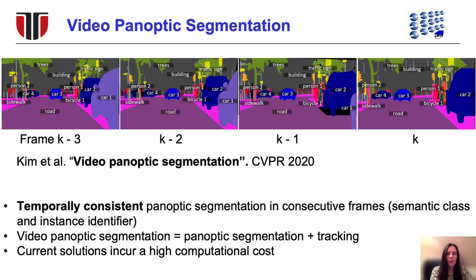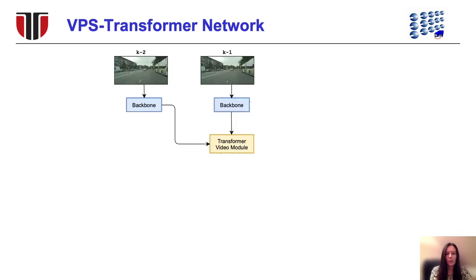Existing methods focus on providing high video panoptic quality, however they incur a high computational cost. We propose a novel video panoptic segmentation approach by extending the single-frame Panoptic-DeepLab network with a transformer video module and a motion estimation decoder. Our transformer video module is inspired by the pure transformer block and refines the current backbone output by processing the sequence of spatiotemporal features of current and past frames.